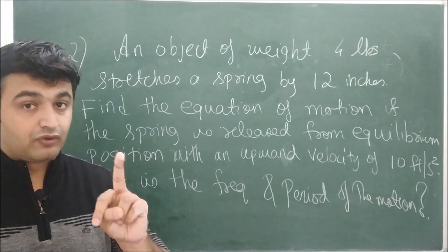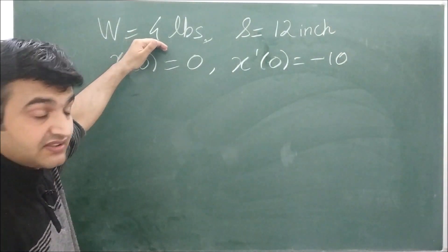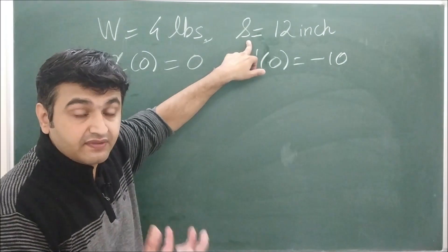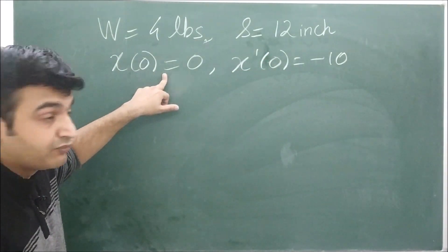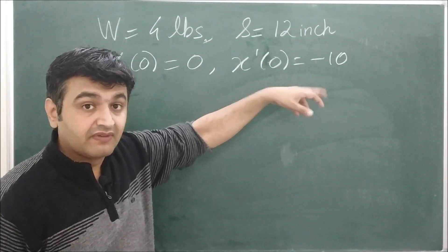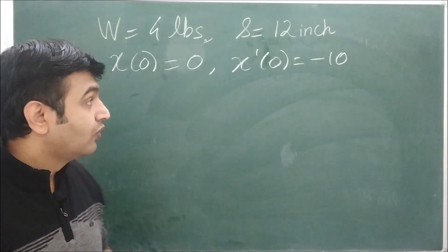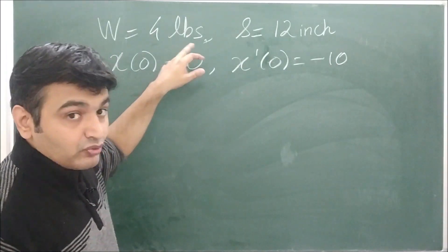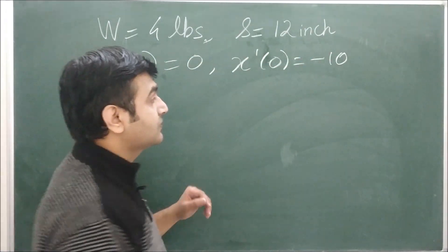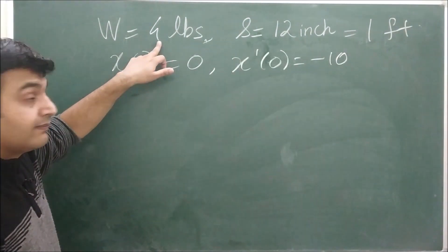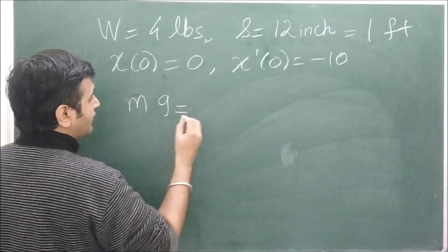The equation of motion is m·x'' + k·x = 0, so we need to find m and k. Given information: weight W = 4 pounds, stretch s = 12 inches. We must use consistent units — 12 inches = 1 foot. From the equilibrium condition mg = ks, with W = mg = 4 pounds and s = 1 foot, we get k = 4.